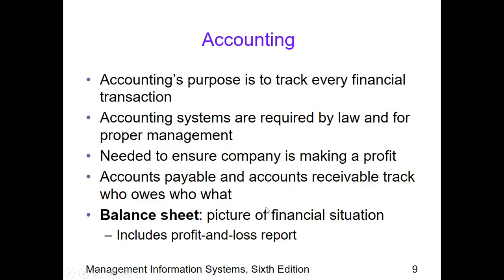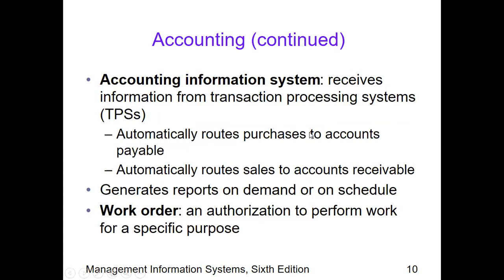Accounting also checks if the company is profitable. AP and AR tracking supports our cycle of operations — accounts payable from purchases and accounts receivable from sales. The balance sheet, now known as the statement of financial position, shows the financial situation of the company, including profit and loss reports. The AIS receives information from TPS, which processes transactions and automatically routes purchases to accounts payable and sales to accounts receivable.